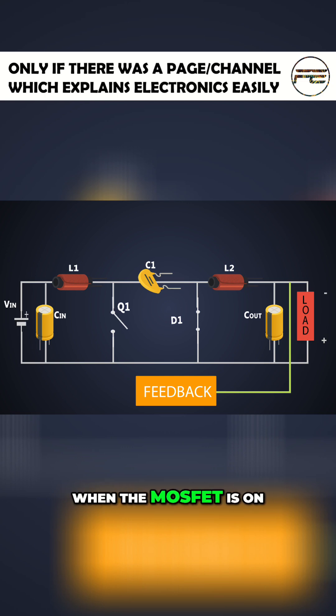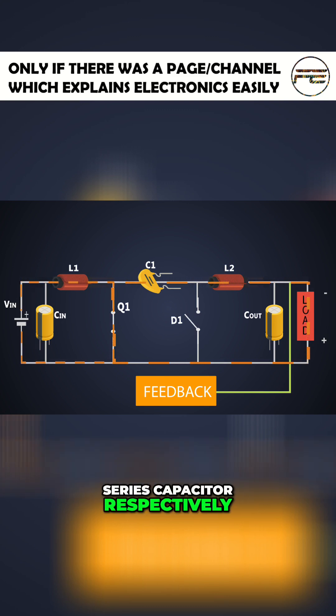In easier words, when the MOSFET is on, the inductor L1 and L2 stores the energy from the input and series capacitor respectively.